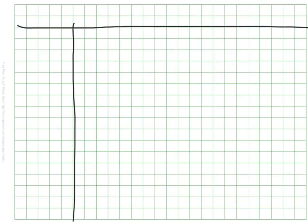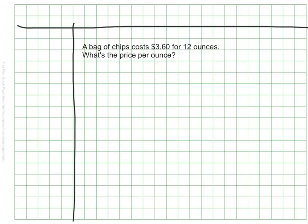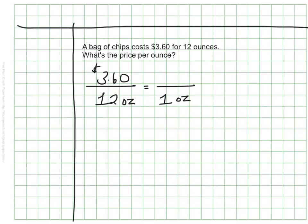I use unit rates a lot in real life when comparing prices of items, particularly at the grocery store, to see which one is a better price. For example, if a bag of chips costs $3.60 and the bag is 12 ounces, I can find the price per ounce — the unit rate. I set up an equivalent ratio: $3.60 for 12 ounces, and I want to know how much it costs for just one ounce. Dividing both by 12, I find a price of $0.30 per ounce.